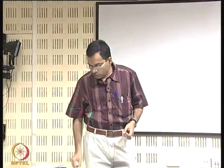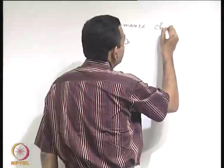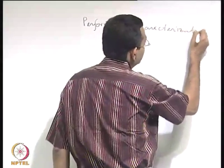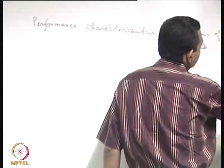We were discussing rotodynamic fluid machines and as an example we discussed some characteristics of the centrifugal pump. Centrifugal pump is not the only example of rotodynamic machines - you could have other rotodynamic machines. In fact, you could have turbines also operating on the rotodynamic principle. Let us consider a more generic example where we try to have a performance characteristic assessment through the performance characterization parameters of a rotodynamic fluid machine.